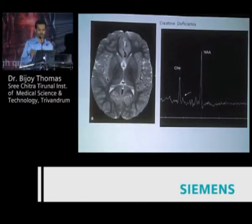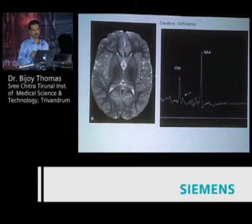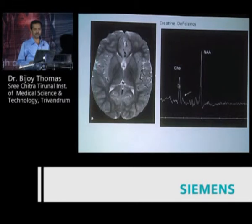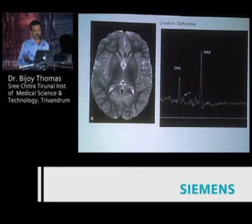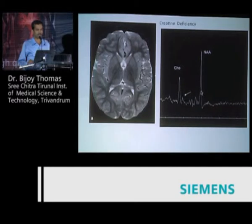Another very important recommendation: do MR spectroscopy in all children with global developmental delay—a single-voxel spectroscopy at TE 144 or 135 in the left basal ganglia should be done in all such cases. This is to detect congenital creatine deficiency. Creatine transporter deficiency is a very rare disorder leading to mild and global developmental delay. If you supplement these patients with creatine, they will actually improve. It can only be diagnosed with MR spectroscopy. In Canada, they have shown three cases in more than 20 years of experience.